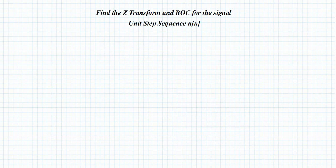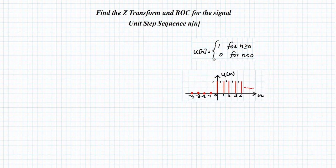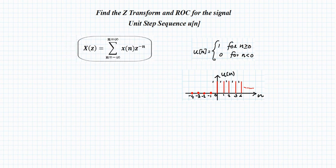Next we find the Z-transform of the unit step sequence U[n]. U[n] is defined as 1 for n ≥ 0 and 0 otherwise. Graphically, the function magnitude is 1 from n = 0 onwards to infinity, and 0 for n = −1, −2, … down to −∞. We use the standard Z-transform formula.